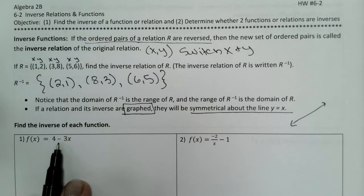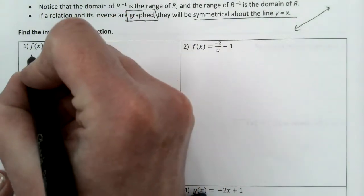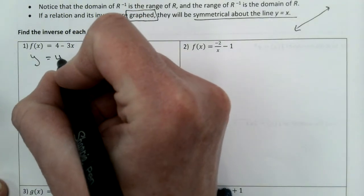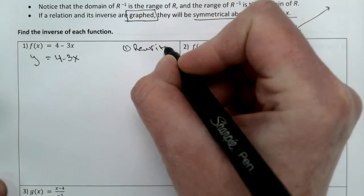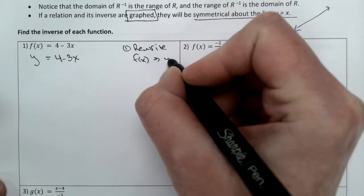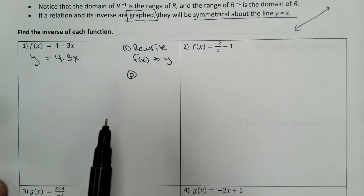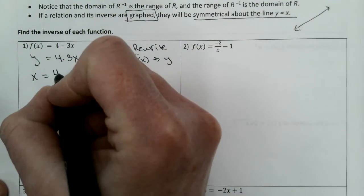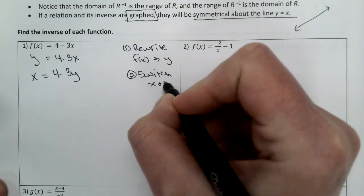So we have this function f of x equals 4 minus 3x. The first thing you need to do is move it out of function notation and write it using x's and y's, so y equals 4 minus 3x. That's step 1: rewrite f of x with a y. Step 2: to find the inverse, you switch x and y, so now it reads x equals 4 minus 3y.